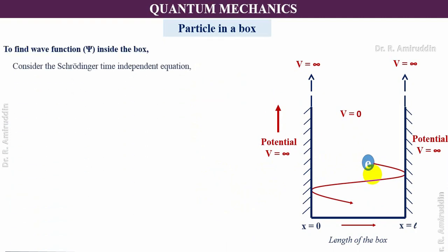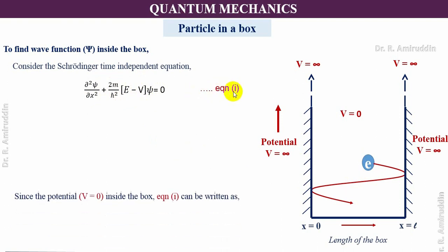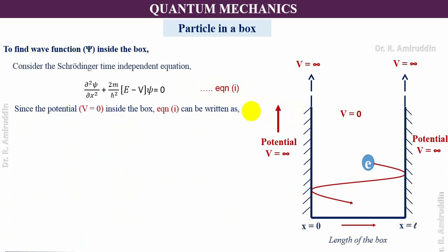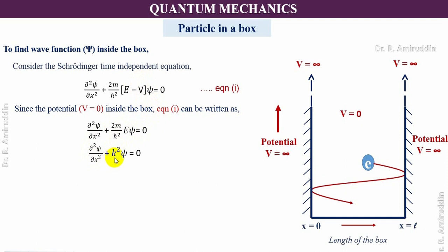Now, to find out the wave function inside the box, let us consider the Schrödinger's time-independent wave equation derived in the last lecture: d²ψ/dx² + (2m/ℏ²)(E − V)ψ = 0 — equation number one. In the present scenario, V equals zero, so equation one becomes: d²ψ/dx² + (2m/ℏ²)Eψ = 0. We can rewrite this as d²ψ/dx² + k²ψ = 0, where k² = 2mE/ℏ².